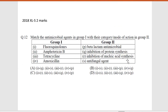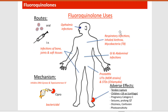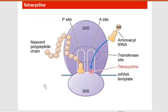Looking at the antimicrobial agents: fluoroquinolones are given for ophthalmic infections, eye infections, wound infections, joint and soft tissue infections, respiratory infections, GI tract infections, or urinary tract infections. The route of administration is mostly oral or intravenous. The mechanism of action is that fluoroquinolones inhibit DNA gyrase, which is involved in DNA replication, and so they inhibit DNA replication.